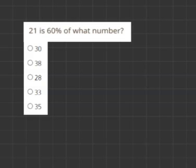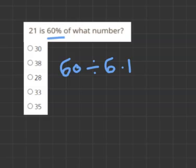Simply put, we could take our 60% and divide it by 6 and then multiply it by 10 to give us 100%. And then we would just do the same thing for 21. But the problem is 21 divided by 6 is not an easy number. So we're going to find an easier way.